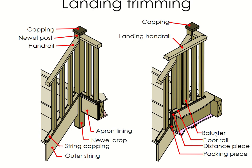For number 11 you'll be asked to draw the landing trimmer. This is a 3D view of the stairs going up to the first floor. There's a capping on top of the newel post — sometimes people have a fancy round one. The newel post is this piece here; a newel drop is where the post comes below your ceiling at ground level, visible when you look up. The handrail is here along with a landing handrail. The outer string is also shown here.